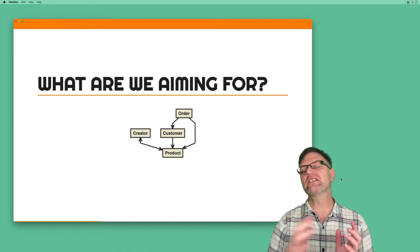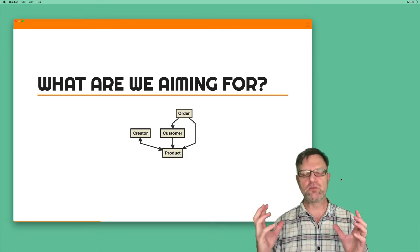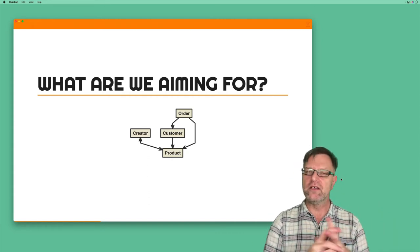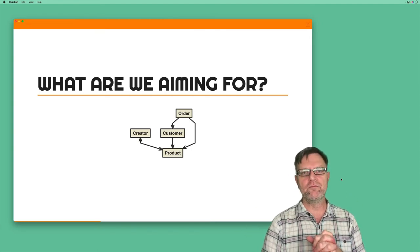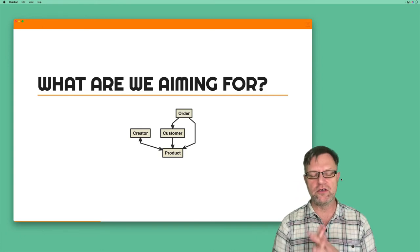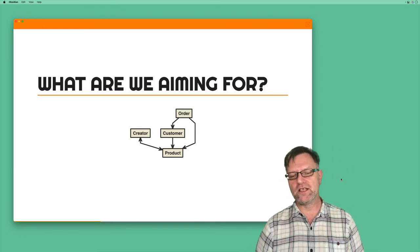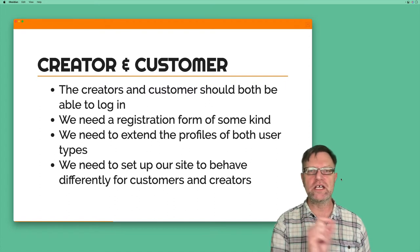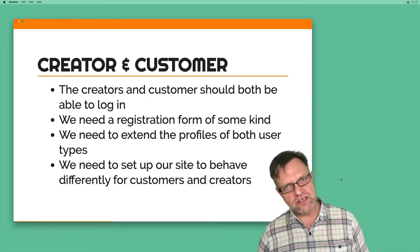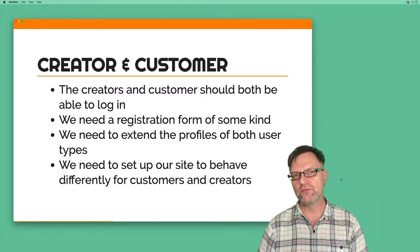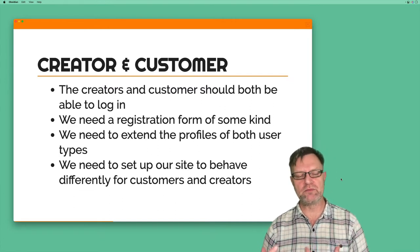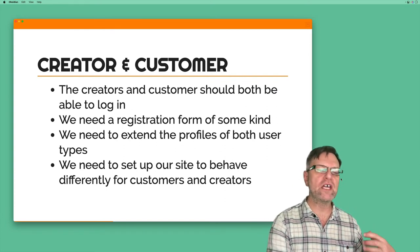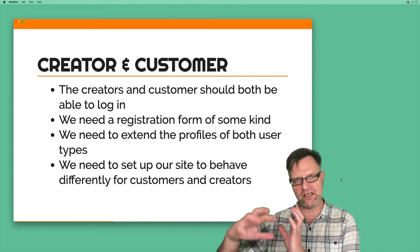So in this video series, what will we build? We will build a site where we have creators who can create products. Every product has a creator connected to them. As a customer, you should be able to order products, and when you want to buy them you create an order within the system. Both creators and customers should be able to log into the site, and for that we need some kind of registration where users register as a creator or as a customer. We also need to extend the profile differently depending on the user type, and permissions should differ based on whether you log in as a creator or as a customer.